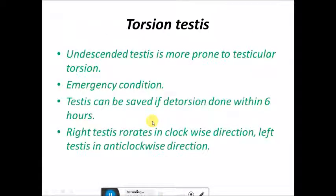Undescended testes are more prone to testicular torsion. One important point is that it is always an emergency condition. The testes can be saved if surgery is performed within six hours and detorsion is done.